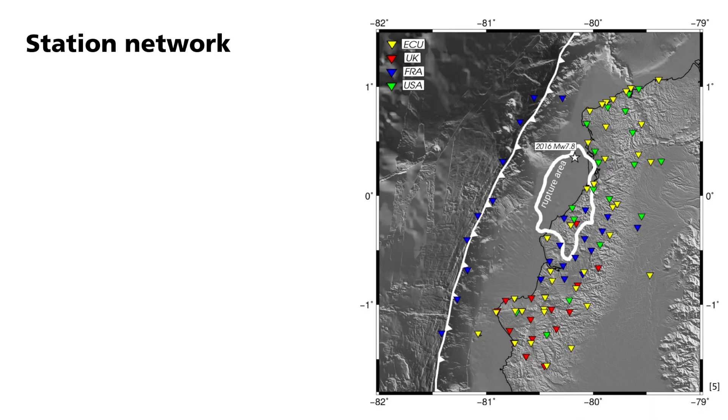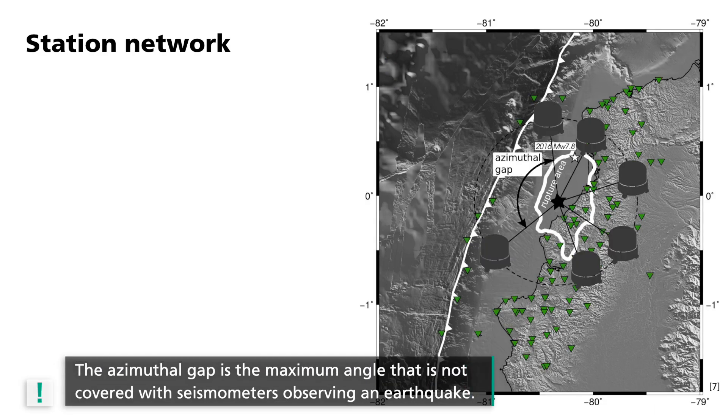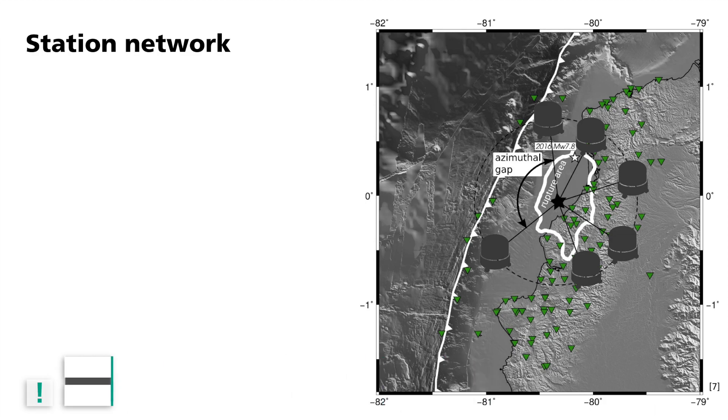The seismometers enhanced the existing permanent station network. The more stations we have, the better the localizations we will get. With this array, we could surround the earthquakes and improve their original localization. The role of the OBSs was very important — they gave us more coverage that helped us to better control the depth, but also to reduce the azimuthal gap caused by the lack of instruments in the Pacific Ocean. The azimuthal gap is the maximum angle that is not covered with a seismometer observing an earthquake, and as you can see in the figure, it is well covered for our study case.